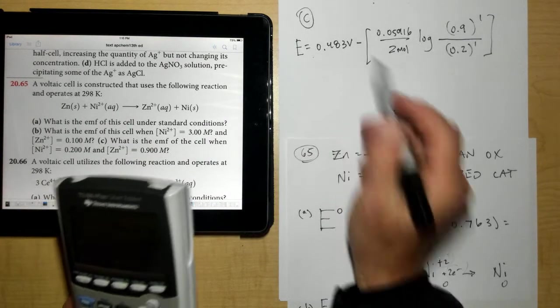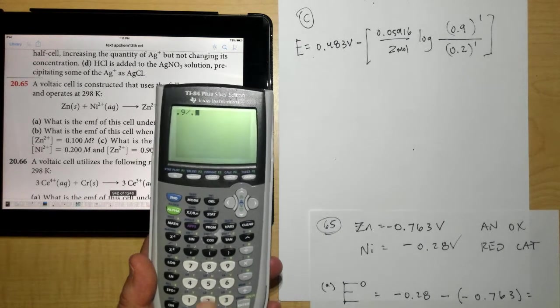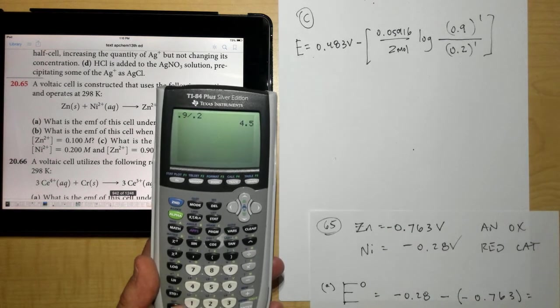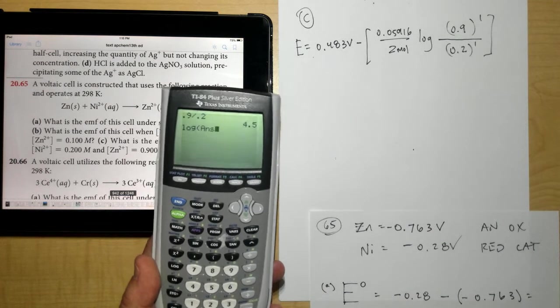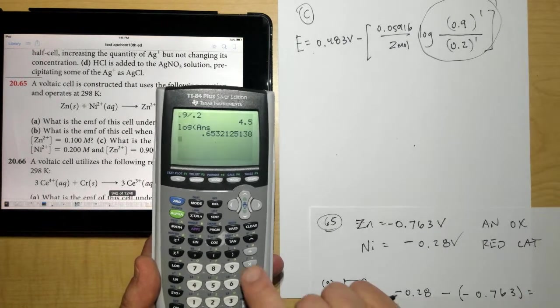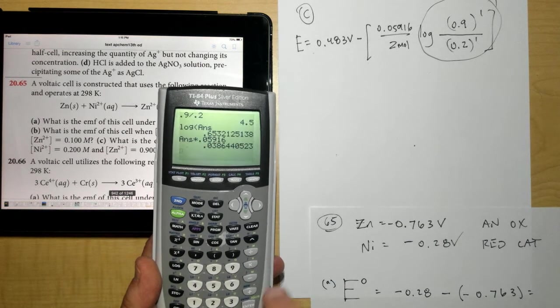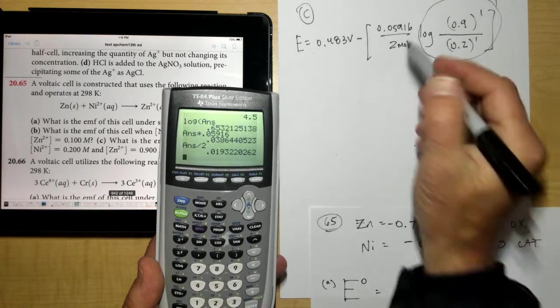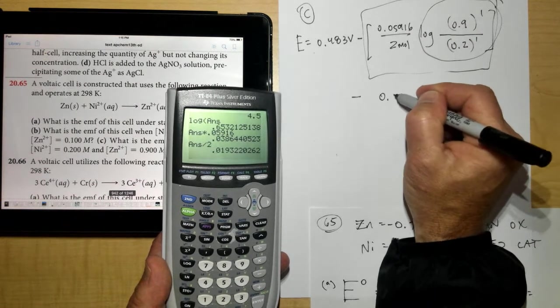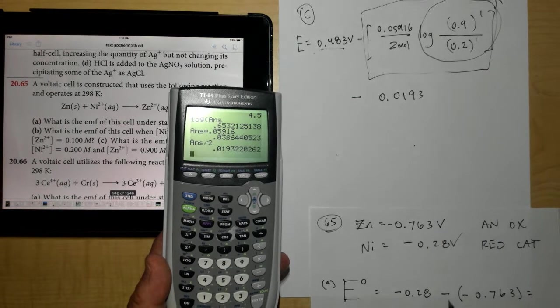So let's try that on the calculator really quick and see if it ends up being a little bit less than the 0.483 volts at standard conditions. 0.9 divided by 0.2. If you'd follow along and try this on your calculator, people that are here, just make sure I don't make a mistake here. Log second answer. So that's what I get for this portion. Times 0.05916. Enter. Divided by 2. Enter. And so I get a positive value for this whole thing, which means I'm going to be subtracting 0.0193 volts from this. So it is going to end up being less.